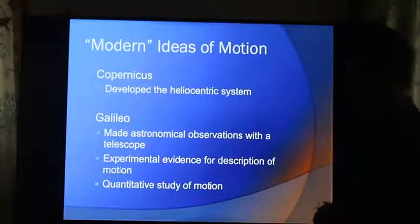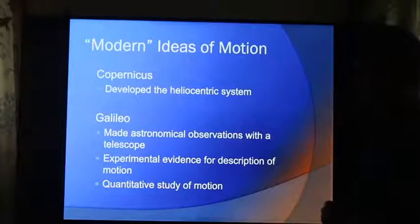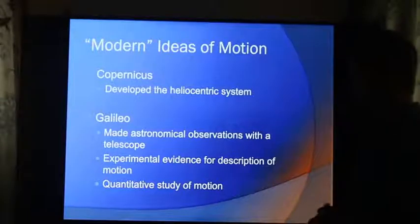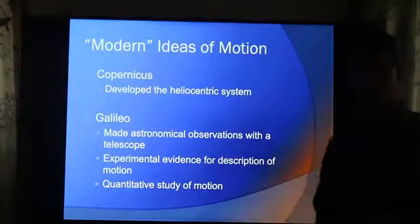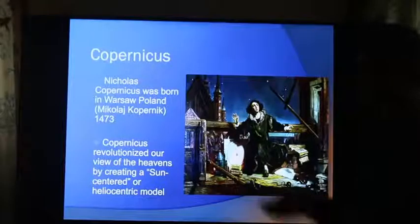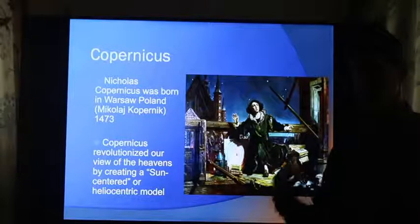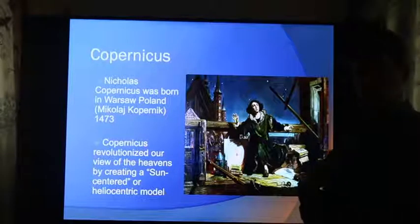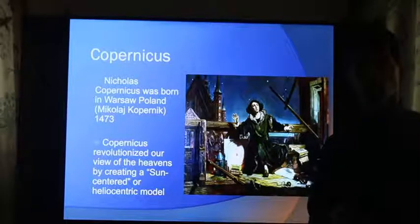Galileo read Copernicus' work and thought it made sense. So he made astronomical observations with his telescope and used experimental evidence using the inclined plane to come up with reasons to overcome what Aristotle had taught and support what Copernicus had discovered. Copernicus was born in Warsaw, Poland around 1473, right at the beginning of the Renaissance. He doesn't publish his work until he's very sick because he's well aware of the support that the Catholic Church had for a geocentric system.